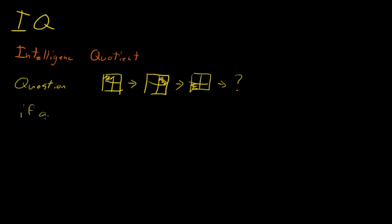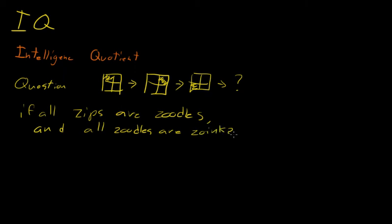Or it might be, if all zips are zoodles - this is sort of a logic question - and all zoodles are zoinks, then are all zips zoinks? And then you'll have to say yes or no. So you have to say if all of these are those and all of those... it's just sort of weirdly worded logic questions that sort of boil down to common sense, but maybe they're a little bit hard to phrase.